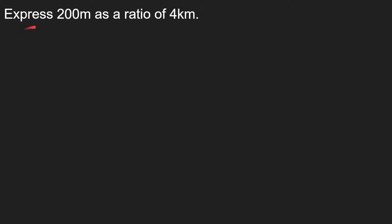Express 200 meters as a ratio of 4 kilometers. This might seem easy but the trick here is that one unit is meters and the other is kilometers. So first we have to convert them into like units, then only we can express it as a ratio.